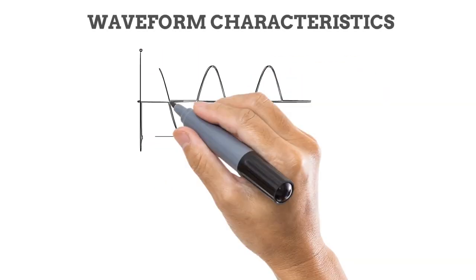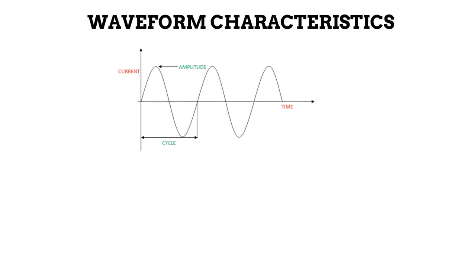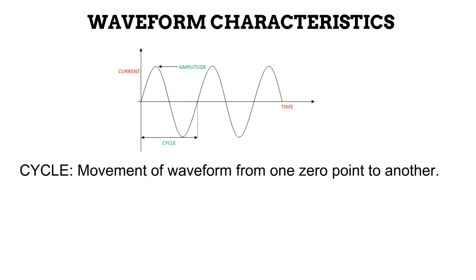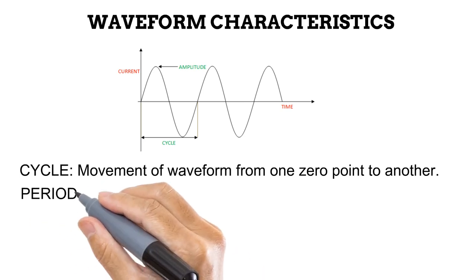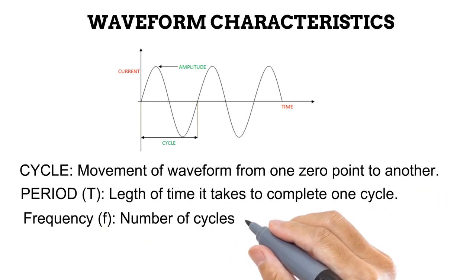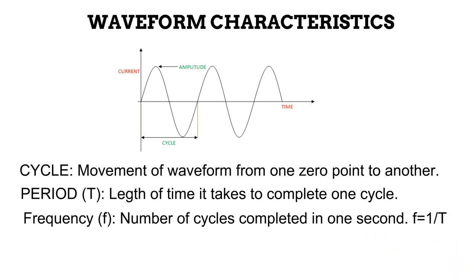The waveform produced by a direct or alternating current has certain characteristics. Let us outline them. First is the cycle, it is the movement of the waveform from a zero point on the horizontal line to another zero point on the horizontal line. A cycle contains a positive half cycle and a negative half cycle. The period T is the length of time in seconds that it takes to complete one cycle. The frequency f is the number of cycles that can be completed in one second. It is measured in hertz.